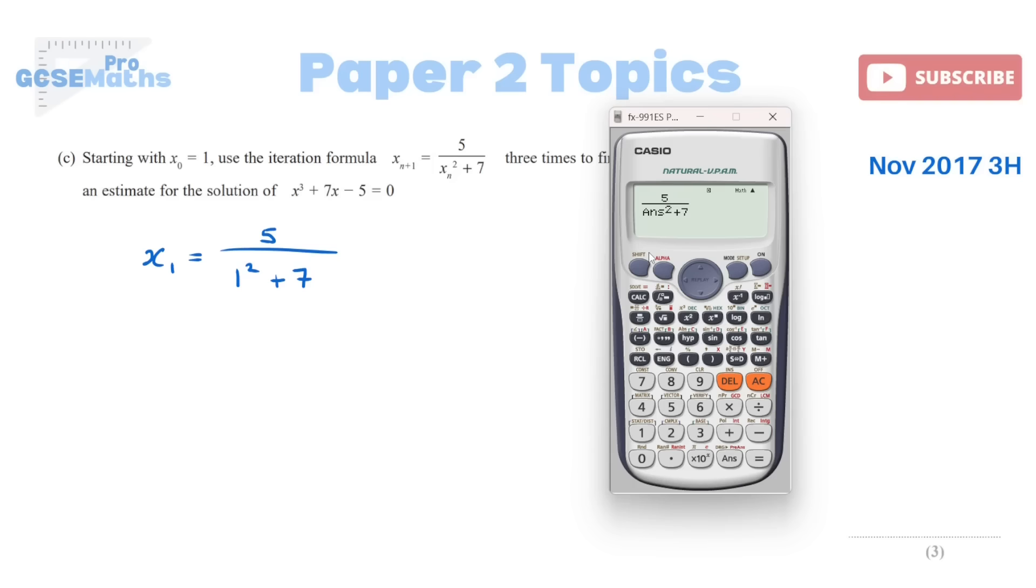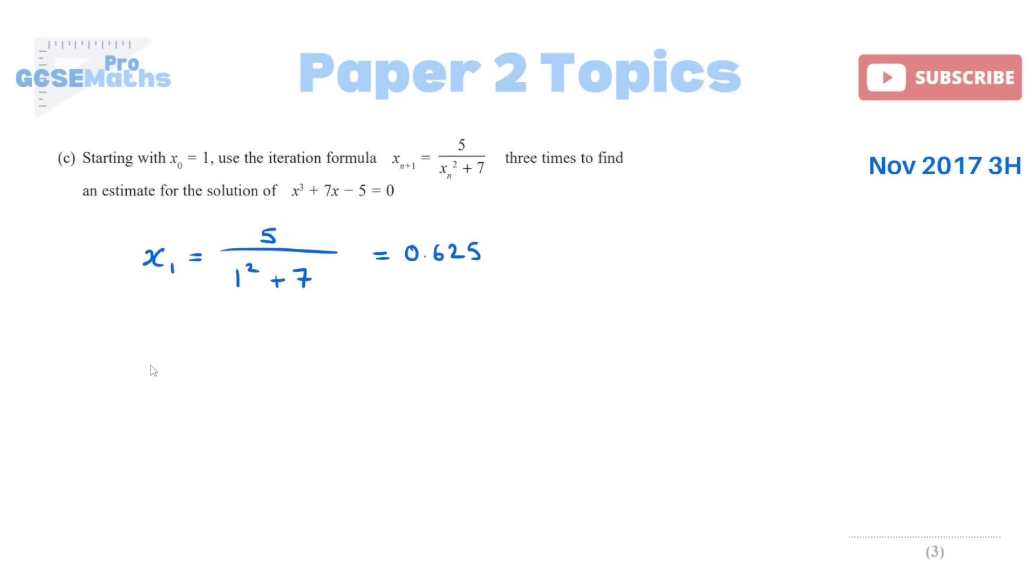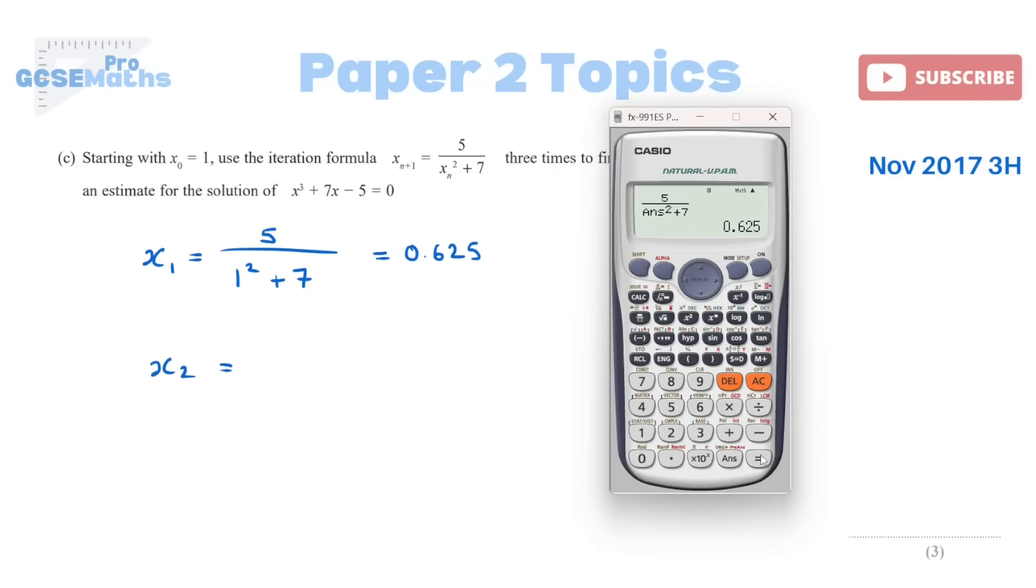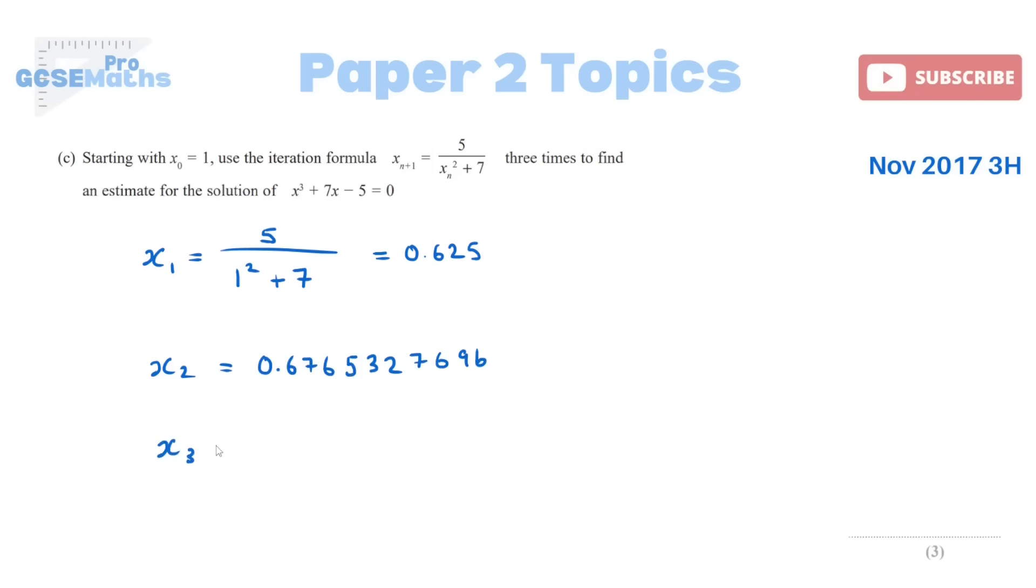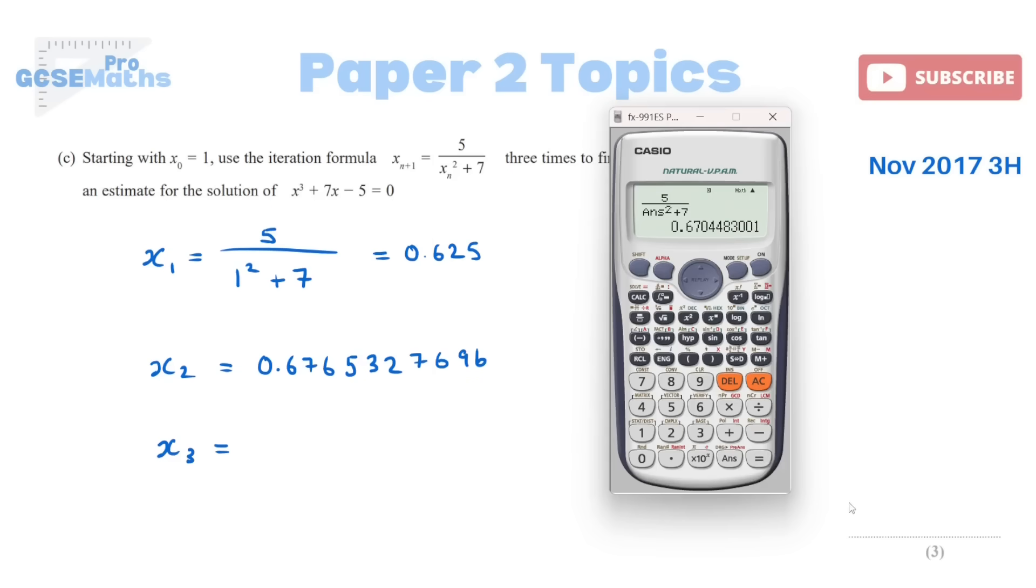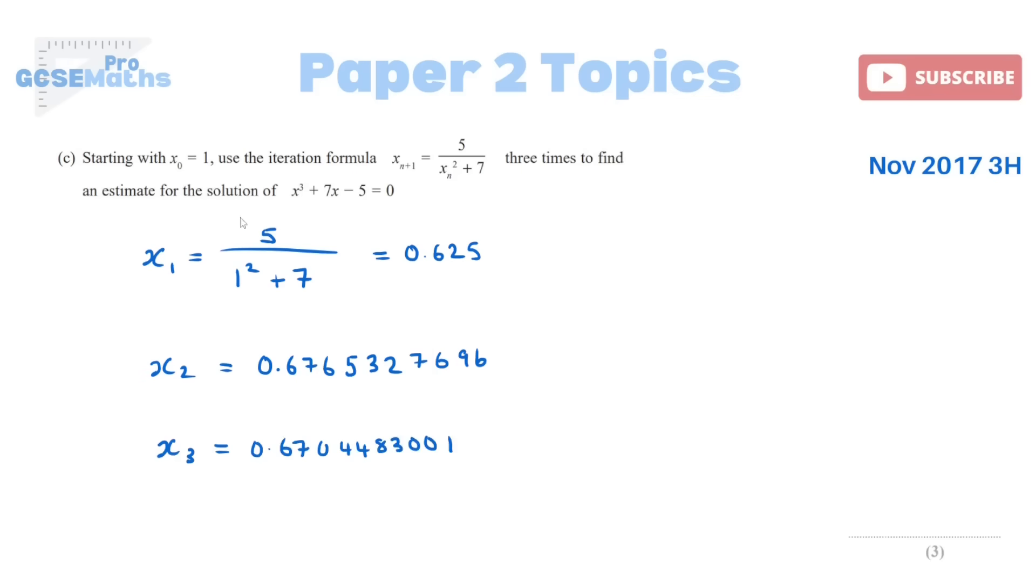If I press it once, it will give me the value for x1, so 0.625. Now for x2, I just need to press equals again, and I've got 0.6765. I'd probably just write down a load of decimals, if not all of them. And then lastly for x3, just do it again. Press equals once more. We've got 0.67044. Now because this one they have asked for an estimate for one solution, you would give your final answer. For me, because they haven't told us how to round it, I am just going to write all of them, just in case.